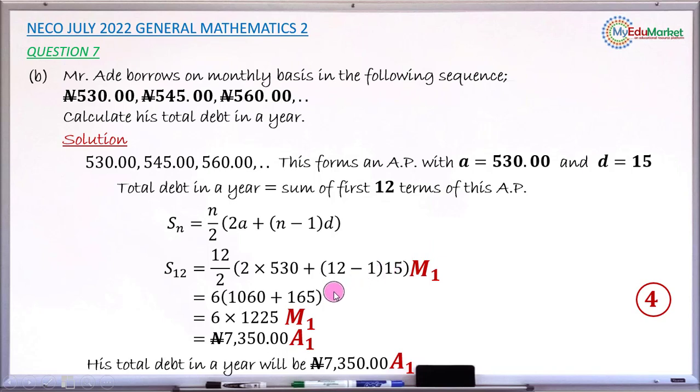And the next mark is for simplifying in attempt to get the sum up to this level. You have this method 1 mark. When you now have the sum of 7,350 Naira correctly, you have this accuracy 1 mark.